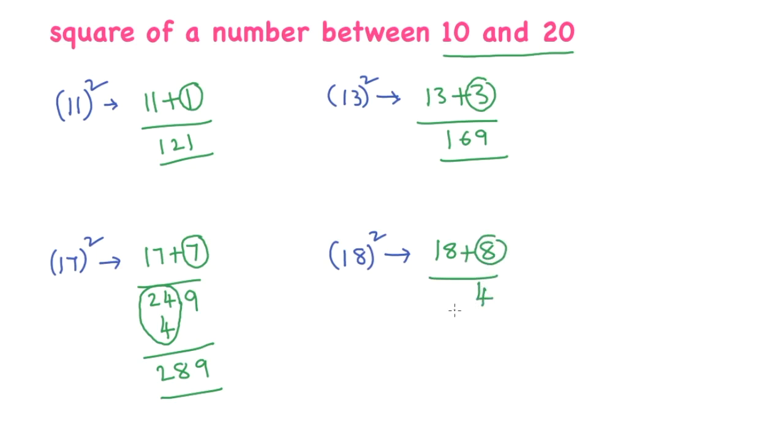As it is a two-digit number, I'll write like this. 18 plus 8 is 26. Now, I'll add these two numbers. 26 plus 6 is 32. So, 18 square is 324.